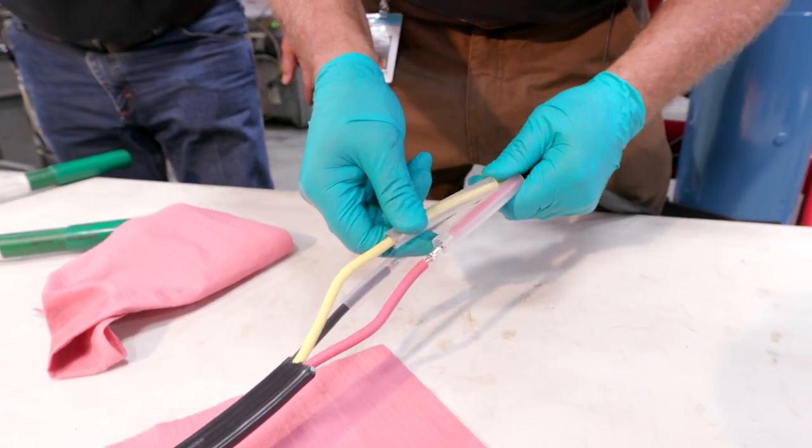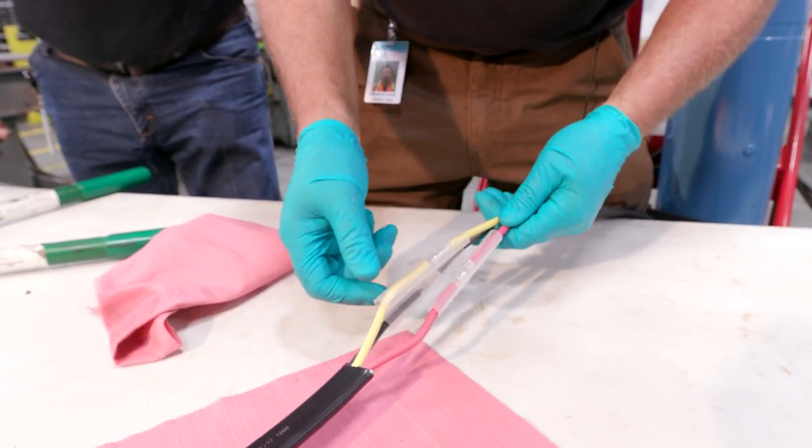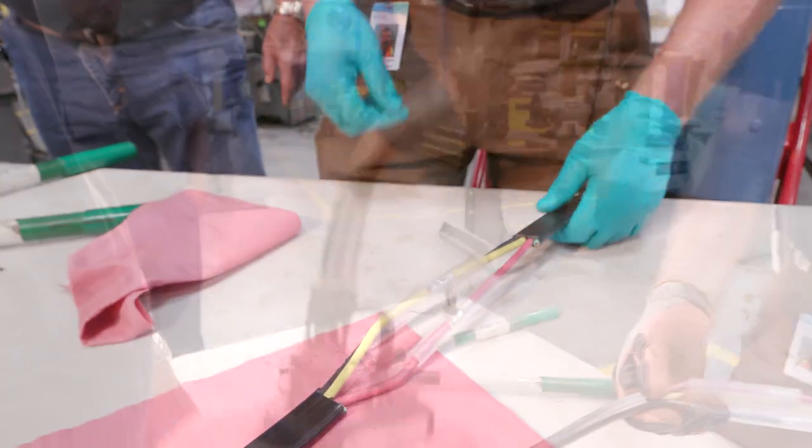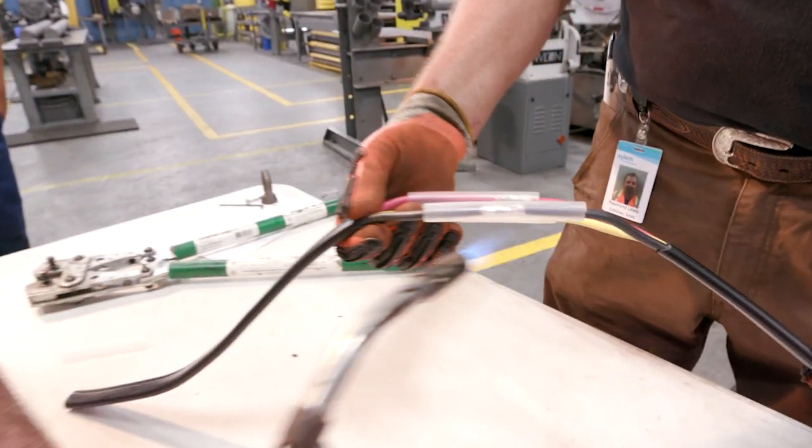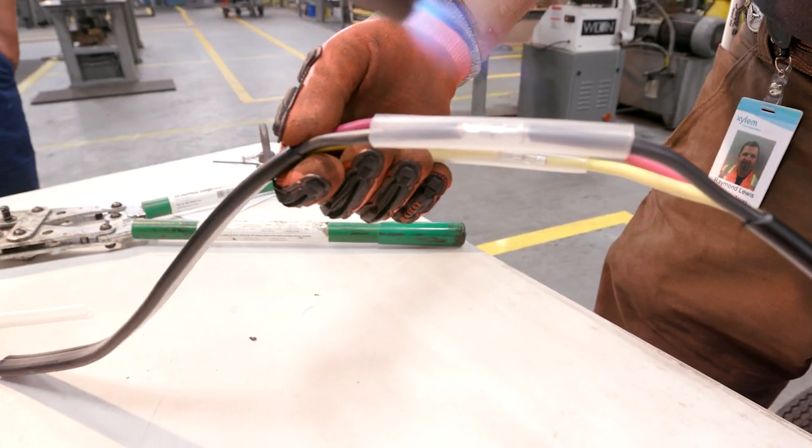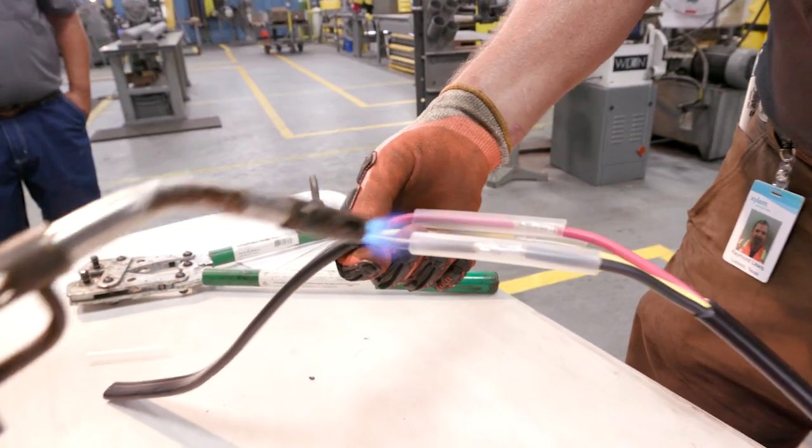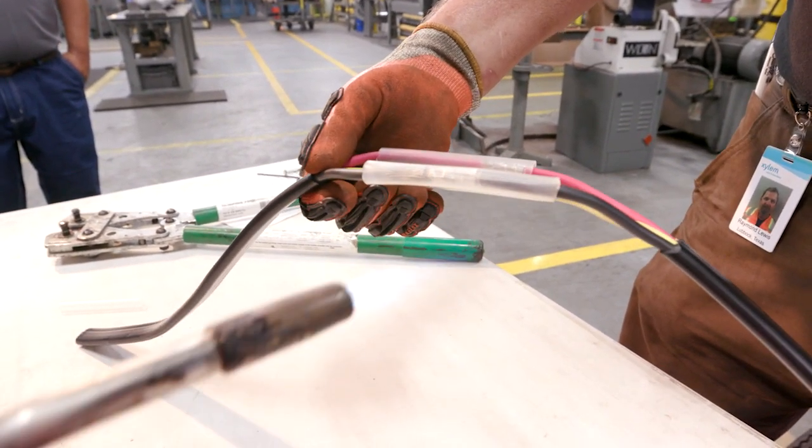Now we're going to slide these up and we'll take a torch and we'll heat shrink these in. Here we are on a heat shrink. We're going to shrink this down to seal the wire.